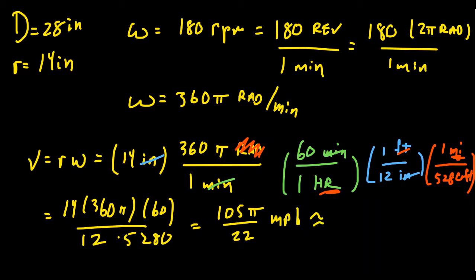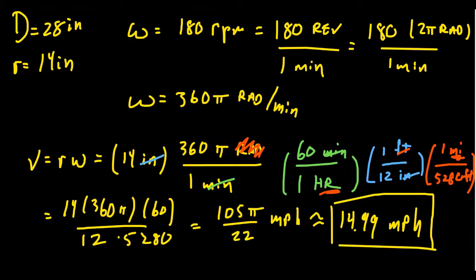If you put that in a calculator, you'd end up with 14.99 miles per hour. So I think it's fair to say that the bike is traveling at 15 miles per hour, which you'll be able to compute using our angular velocity formula.